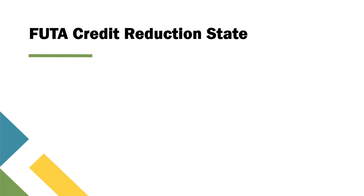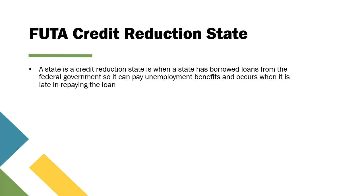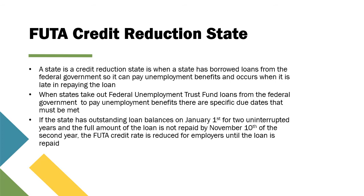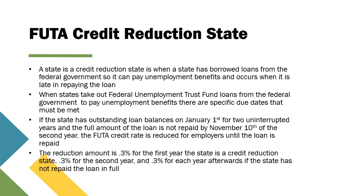A FUTA credit reduction state is when a state has borrowed loans from the federal government to pay unemployment benefits and is late in repaying the loan. If a state has outstanding loan balances on January 1st for two uninterrupted years and the full amount is not repaid by November 10th of the second year, the FUTA credit rate is reduced for employers. The reduction is 0.3% for the first year, 0.3% for the second year, and 0.3% for each subsequent year until the loan is repaid in full.